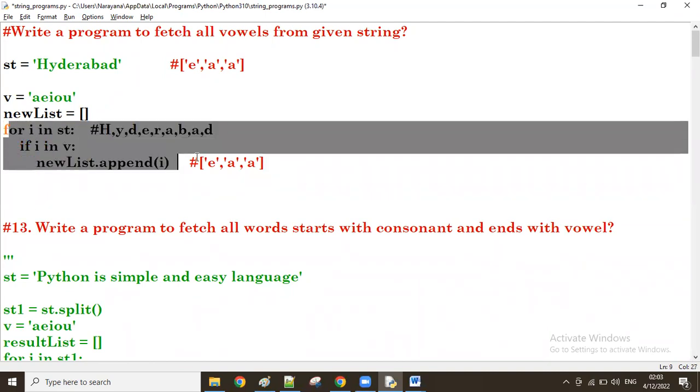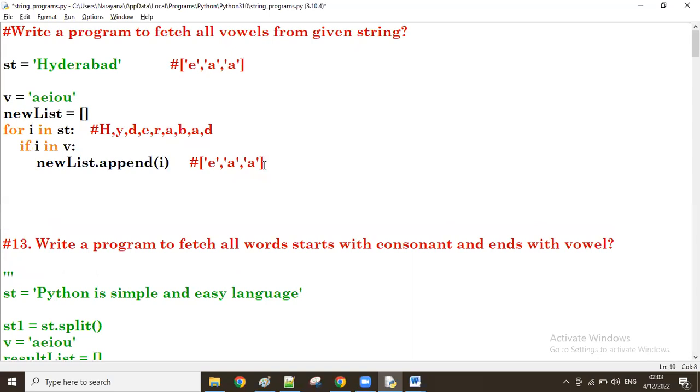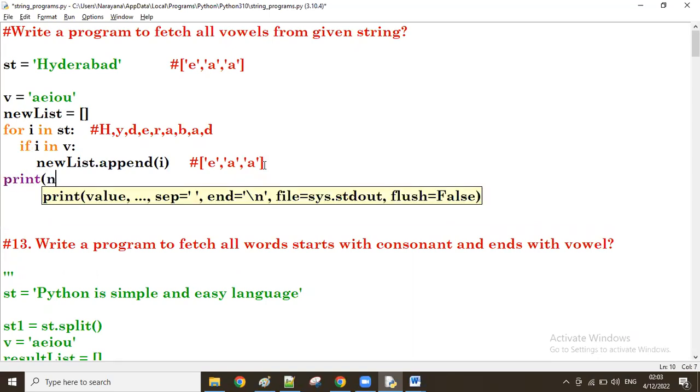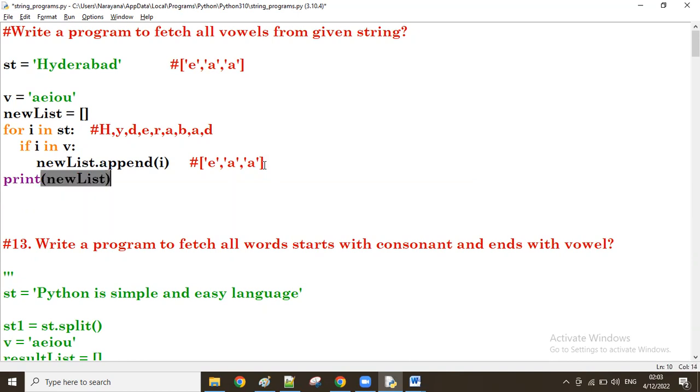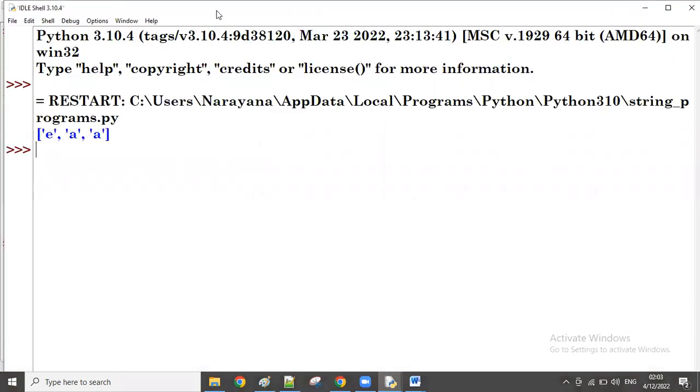After all iterations, this is the final list. That I will display. So outside the for loop, we take the new list and display. Now run this one. You can get this result.